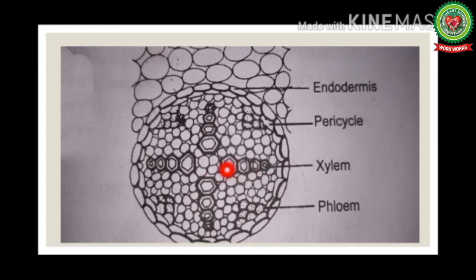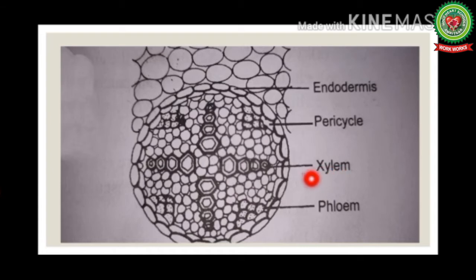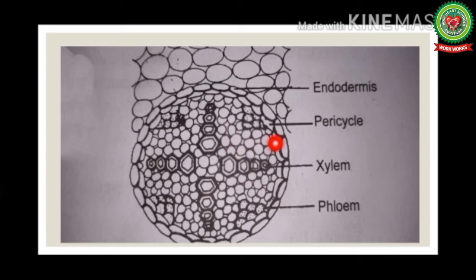The vascular bundles show radial arrangement — xylem and phloem are present on different radii alternately. The number of xylem and phloem bundles is equal; phloem lies between the radial arms of xylem. Xylem shows exarch condition, meaning metaxylem is present towards the inner side and protoxylem towards the outer side. In dicot roots, two to six xylem and phloem bundles are present. The parenchyma cells between phloem and xylem are called conjunctive tissue, which will later form cambium during secondary growth.